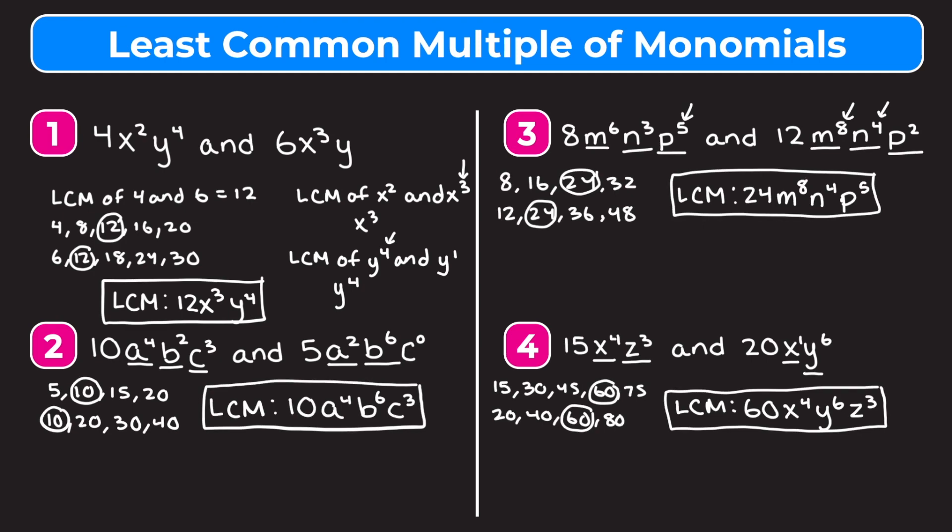Hopefully this video helped you understand how to find the least common multiple of monomials. Just remember: when finding the LCM of variables, always take the highest exponent that shows up for each variable.